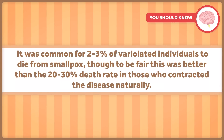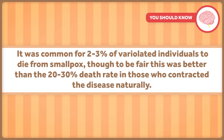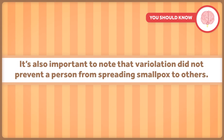Of the 248 people variolated, only six died. Variolation has its downsides, though. It was common for 2-3% of variolated individuals to die from smallpox, though to be fair, this was better than the 20-30% death rate of those who contracted the disease naturally. It's also important to note that variolation did not prevent a person from spreading smallpox to others.